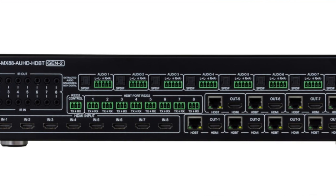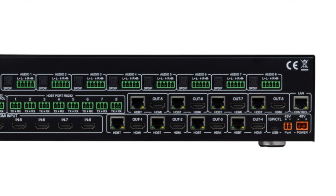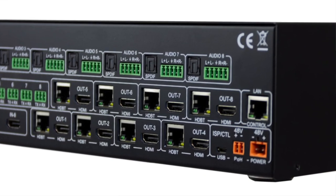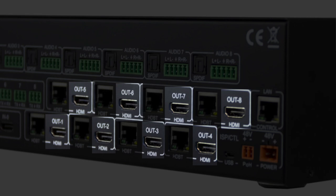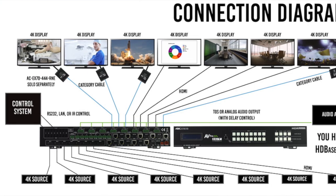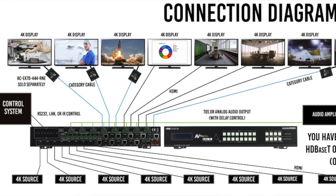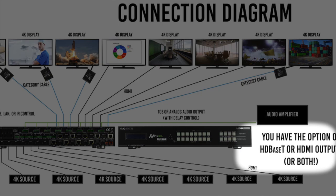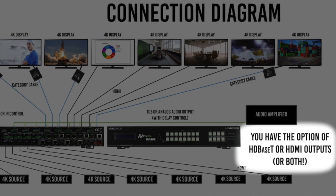The next version is the HDBaseT. This version offers HDBaseT outputs, and some units will even offer HDBaseT inputs for remote devices. You'll have the same options as the previous level matrix switch, but some HDMI matrix switches will also have HDMI mirroring. This means whatever comes out of the HDBaseT output will also come out of the mirror port. So with an 8x8 matrix switch, you have 8 sources and 8 displays, but you can double up to 16 displays as long as you don't mind two pictures.